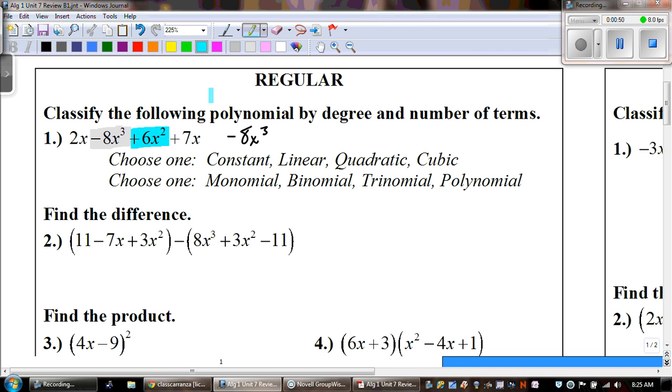Then we have the plus 6x squared. And once again, that's all by itself. And then last, I've got 2x. Oh, but I have 7x too. 2x plus 7x is 9x.